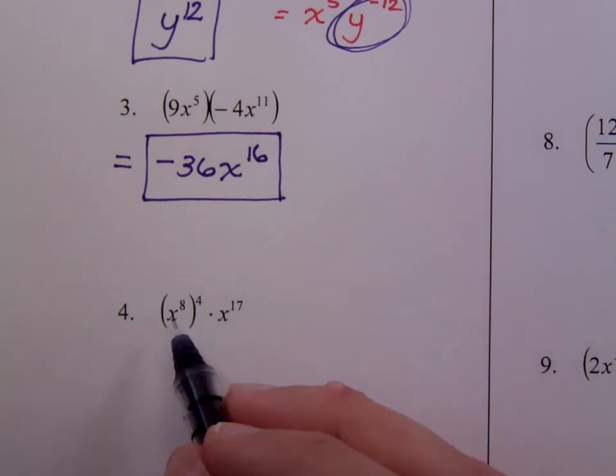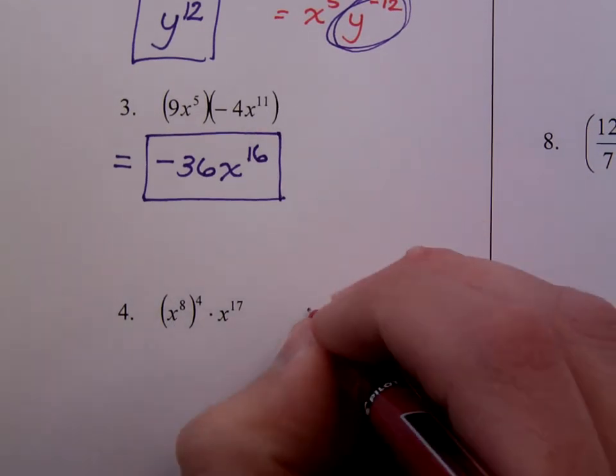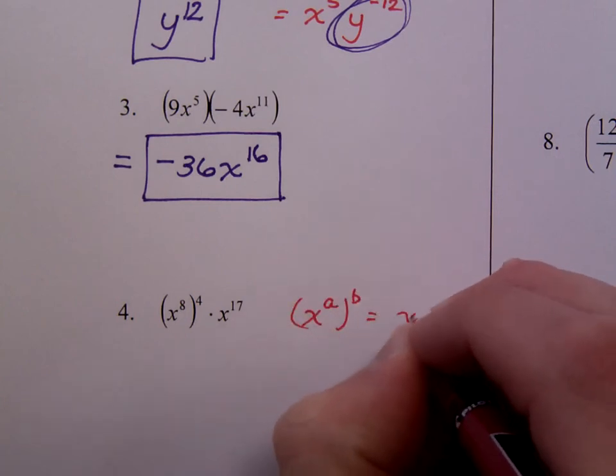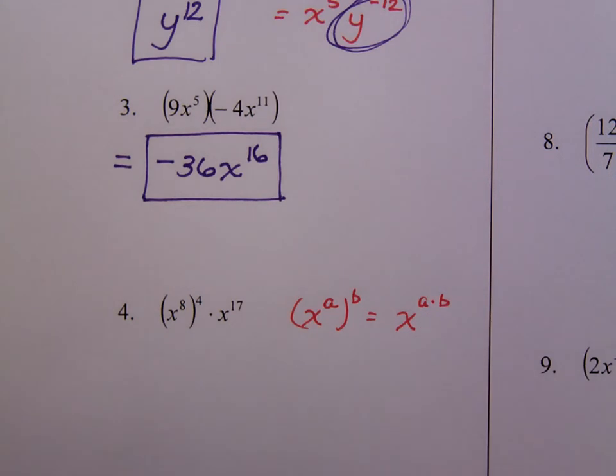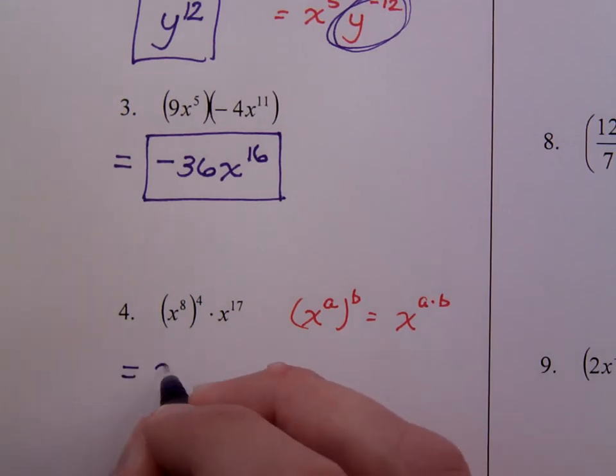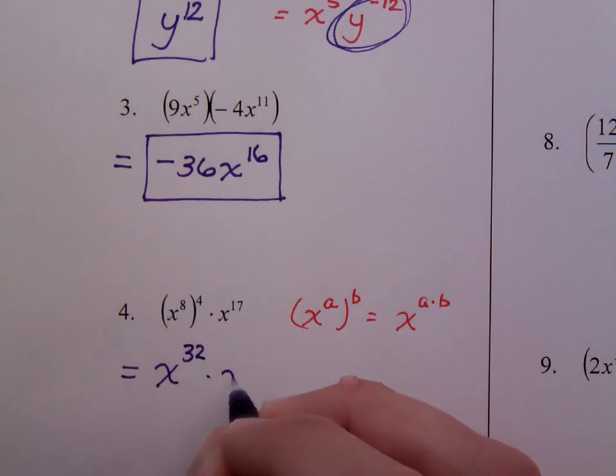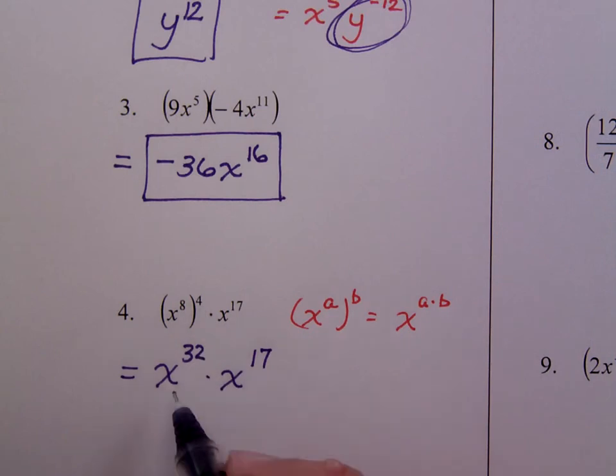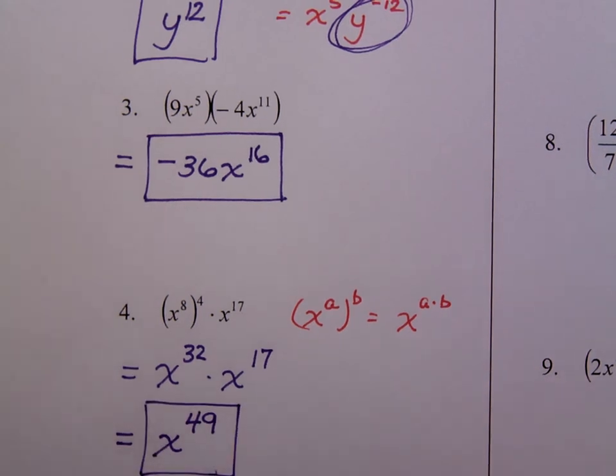In number 4, you have a power to a power. So, to recall, a power raised to a power means you will multiply those exponents. So initially, we have x to the 32nd times x to the 17th. You have 8 factors of x, but you have that 4 times. So that's 32 factors of x. So 32 factors of x and 17 factors of x is x to the 49th. And don't you wish they could all be this nice.